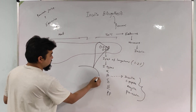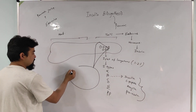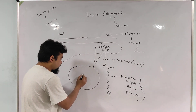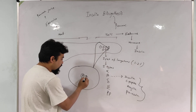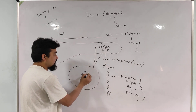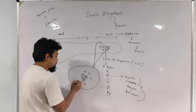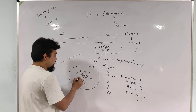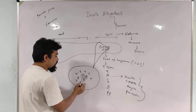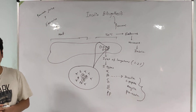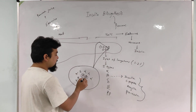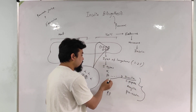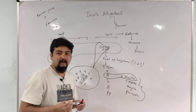Within the islets of Langerhans, beta cells are present in the center — the core region. They are surrounded by alpha cells, and in between them, delta cells, epsilon cells, and pancreatic polypeptide cells are embedded. Now let's talk about insulin biosynthesis in detail, which occurs from the beta cells of the pancreas.